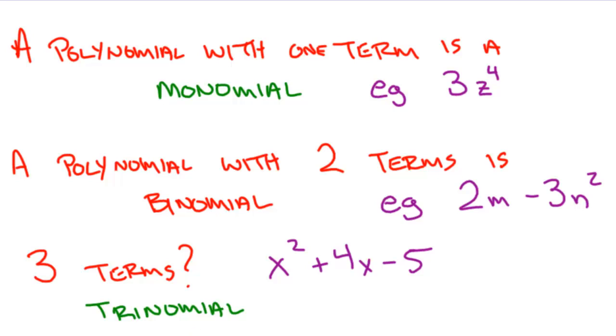So, polynomials are expressions that have terms strung together with addition or subtraction. We can have some special names for these expressions. Monomials, binomials, trinomials, depending on how many terms we have.